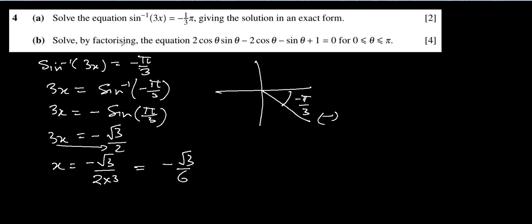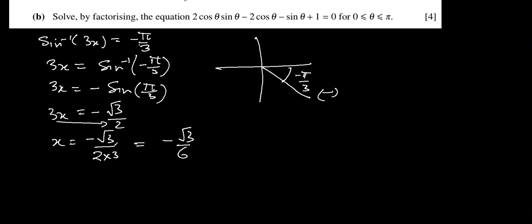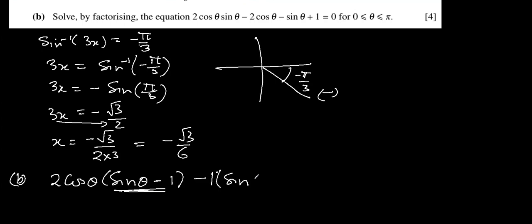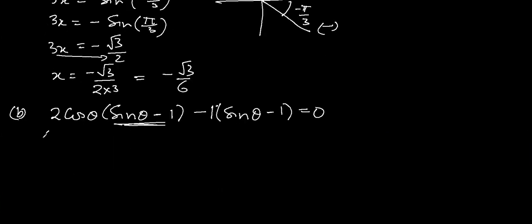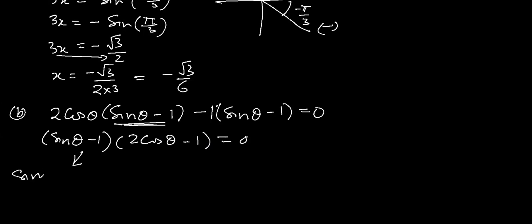Part B: solve by factoring. We can see that 2 cos θ appears in two terms, so we take 2 cos θ as a common factor. The expression factors as 2 cos θ times (sin θ minus 1) equals zero. This gives us two equations: sin θ minus 1 equals 0, so sin θ equals 1 and θ equals sin⁻¹(1); and 2 cos θ minus 1 equals 0.